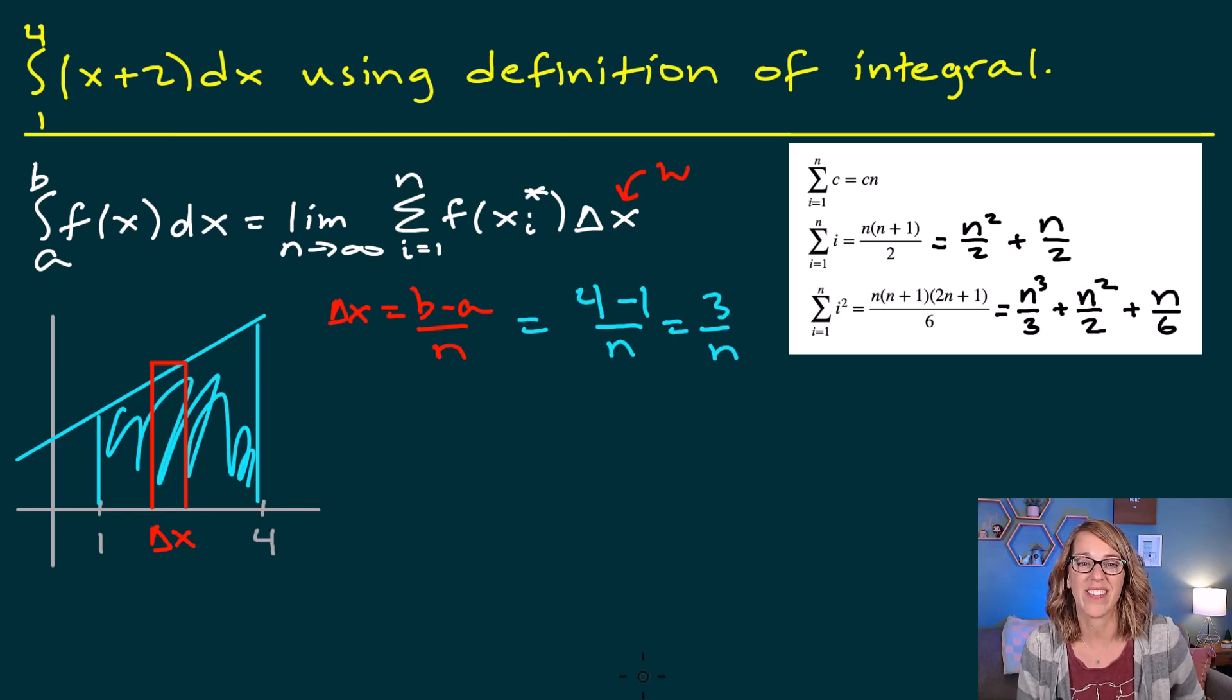We also have a height, and that height is going to be the function value f of x sub i. And we're going to calculate that function value using x plus 2, but we need to figure out what x sub i is. This formula uses right-hand rectangles. So x sub i star is going to be at the start place plus i delta x.